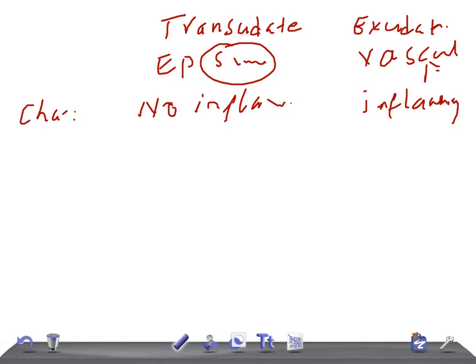The best example of transudate is edema in congestive heart failure, and for exudate a good example is purulent exudates such as pus from infections.